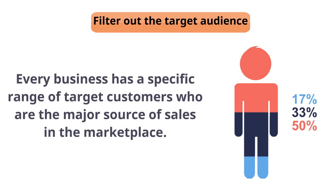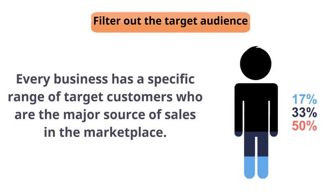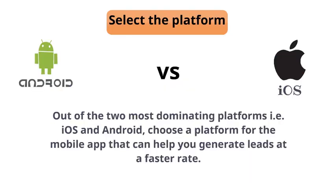Fourth, select the platform. Out of the two most dominating platforms — iOS and Android — choose a platform for the mobile app that can help you generate leads at a faster rate.